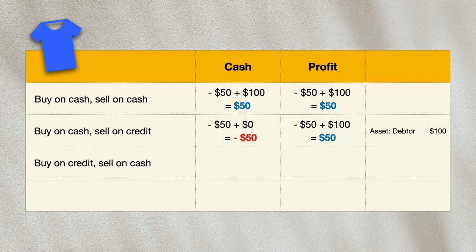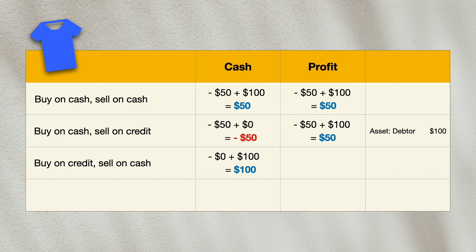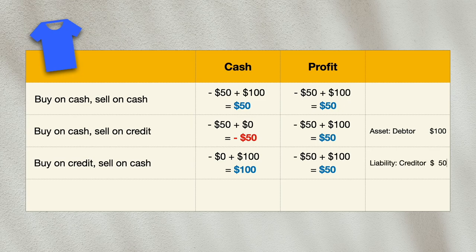But what if we buy the t-shirt on credit and sell it to the customer for cash? In this case, we will not have any cash outflow, but we will have received a cash inflow of $100 from the customer, giving us a surplus cash of $100. The profit generated remains at $50 under accrual accounting. There is now an external claim by the t-shirt supplier of $50, representing a creditor — classified as a liability that must be repaid. So while the business may appear to have excess cash of $100, it must be remembered that $50 is owed to creditors.